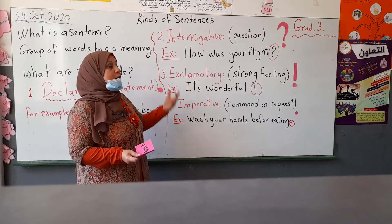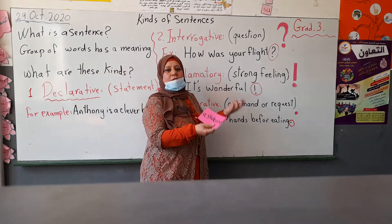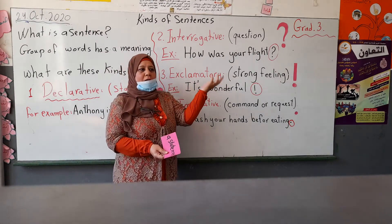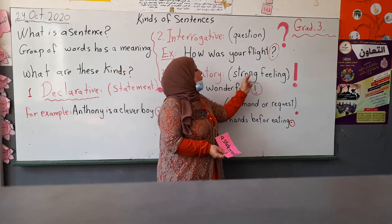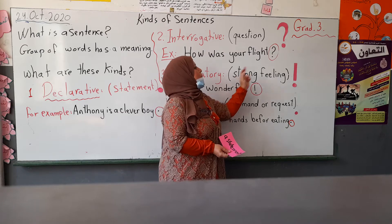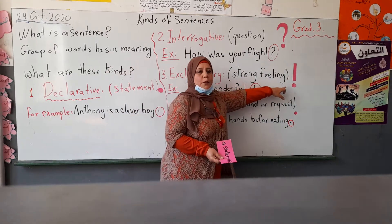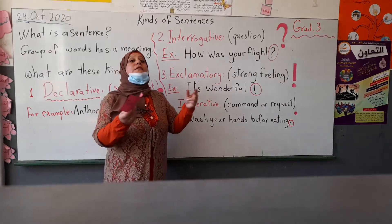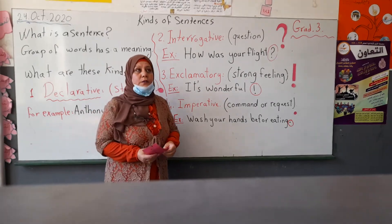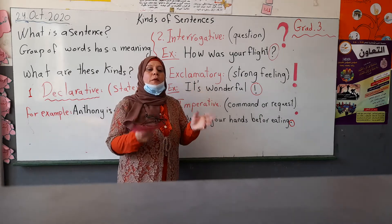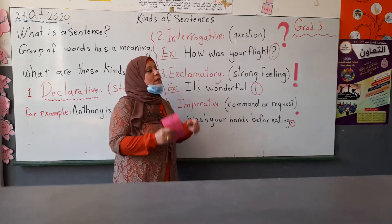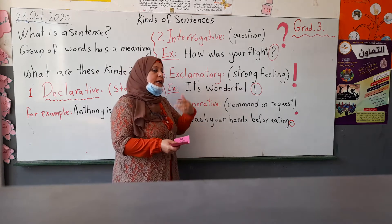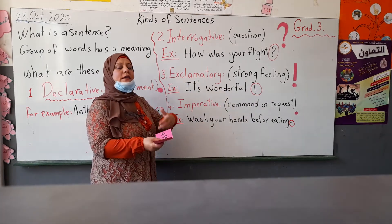Number three is the exclamatory sentence. Exclamatory means to be astonished — if you are really shocked by something, it expresses a strong feeling or strong emotion, and it ends with an exclamation mark. For example, Anthony asked his father about whether there is a big problem of light pollution in their country, and his father said 'Sure!' — that is a kind of exclamatory sentence expressing a strong feeling.